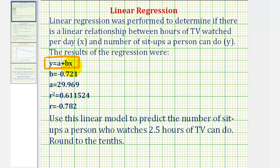So for our regression equation, notice that B, the slope of the line, would be negative 0.721, and A, or the y-intercept, would be 29.969.